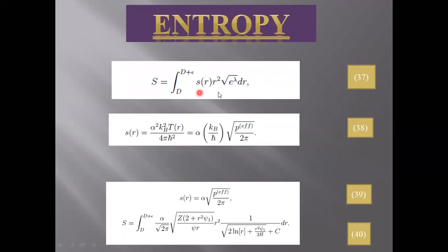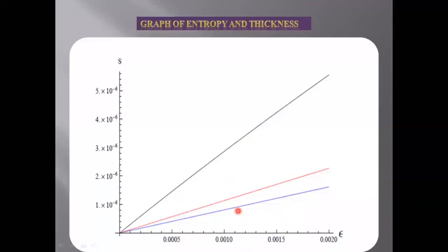Using the Gibbs relation and putting all these values of equations 38 and 39 in equation 37, we have found equation 40. The graphical relation of entropy and thickness shows that increasing the thickness will increase the entropy.